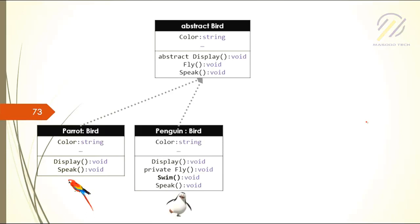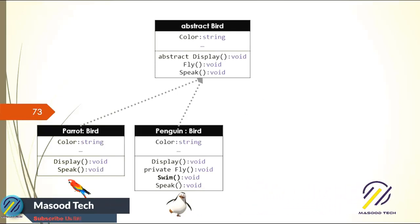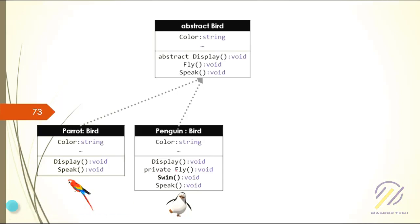But penguins have a special ability - they cannot fly, but they can swim. So they have a special ability: they can swim but they cannot fly. So I'm really making the fly method private.